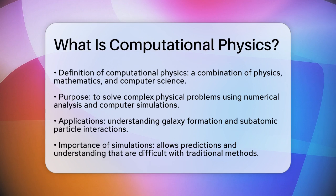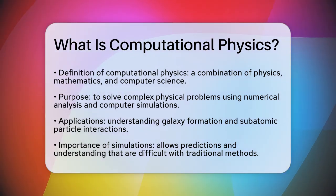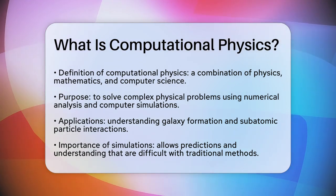Computational physics is a field that combines physics, mathematics, and computer science to solve complex physical problems. It's essentially about using numerical analysis and computer simulations to study and predict the behavior of physical systems.